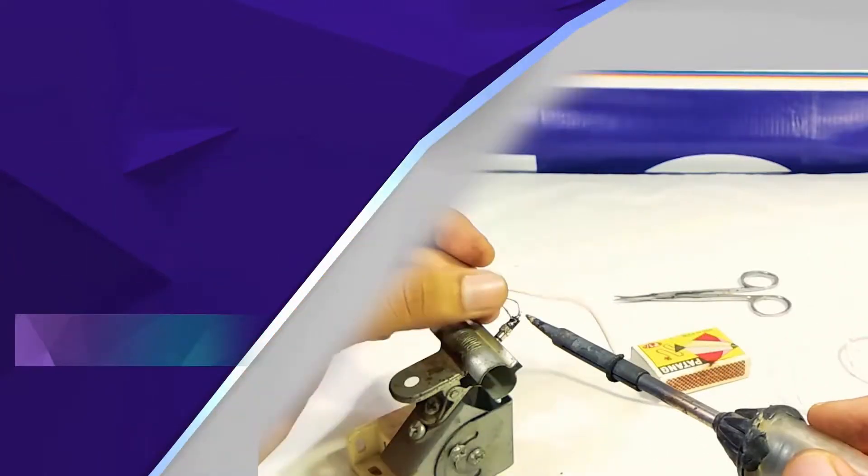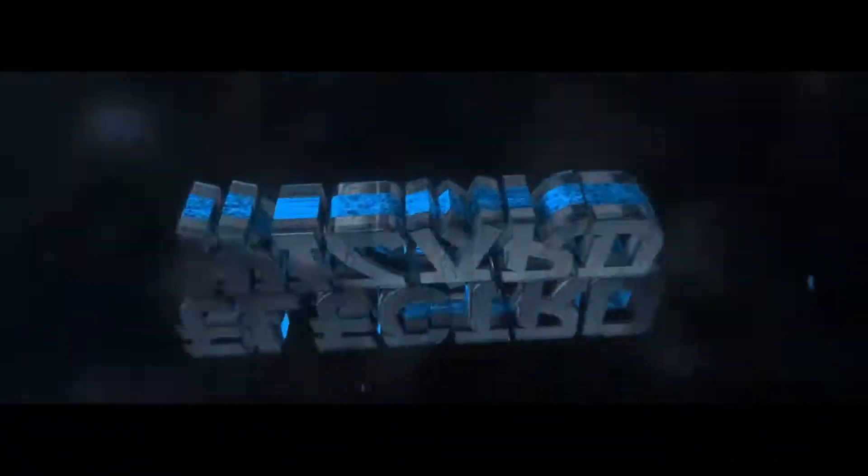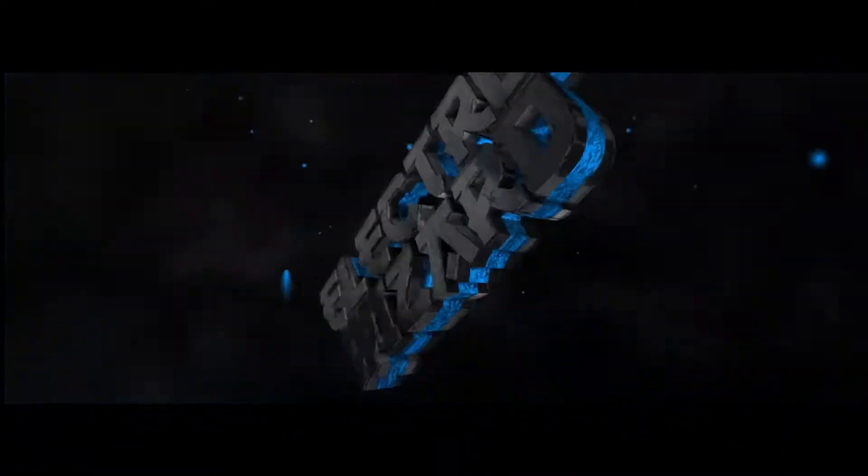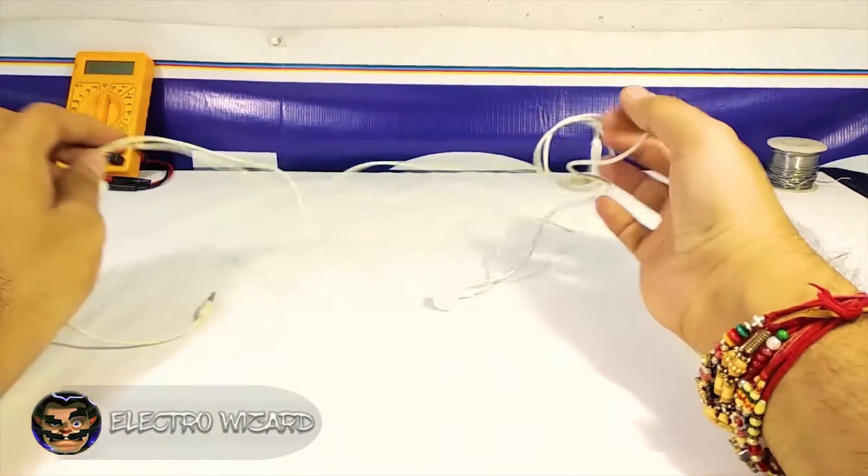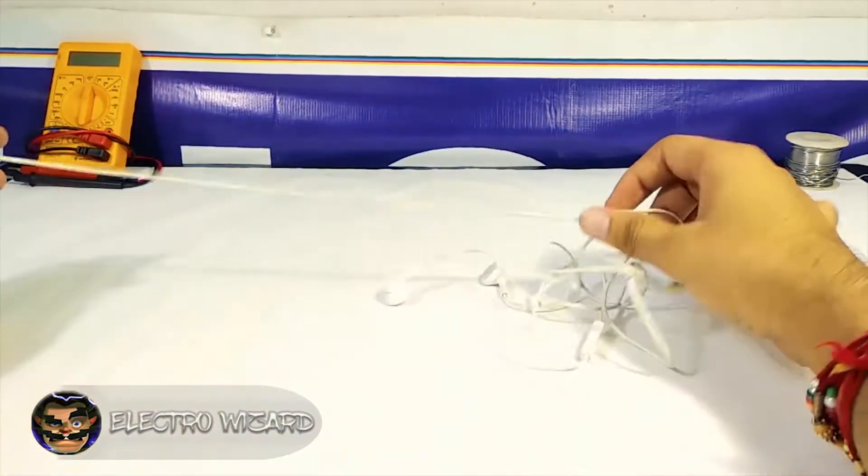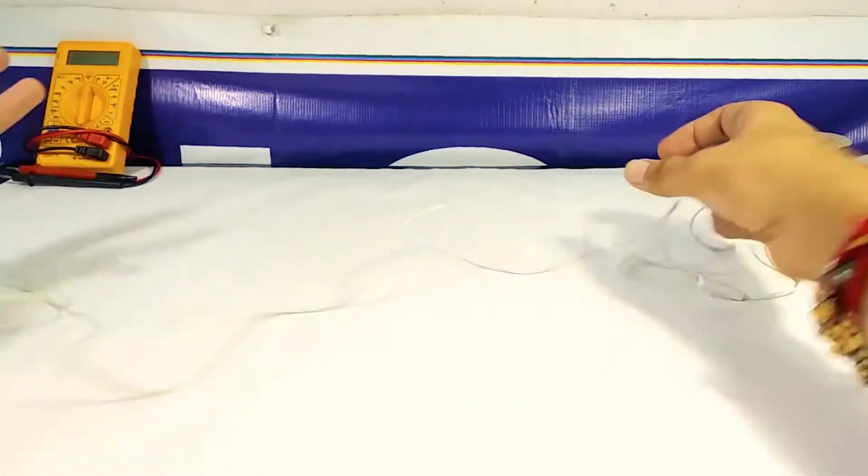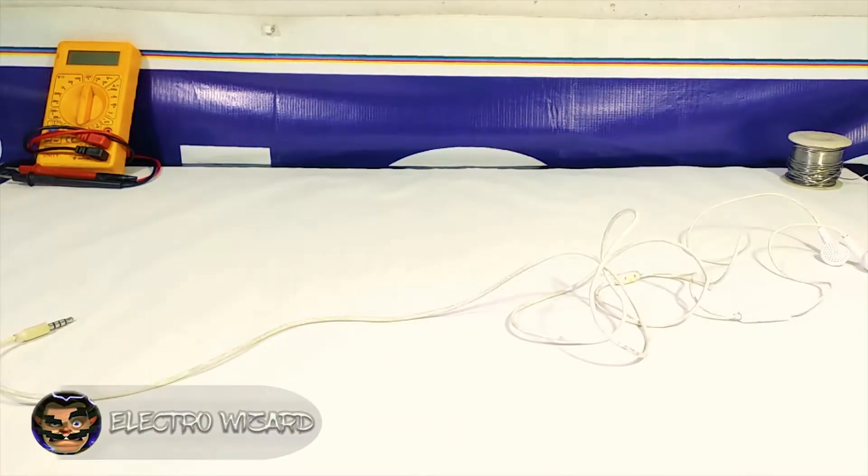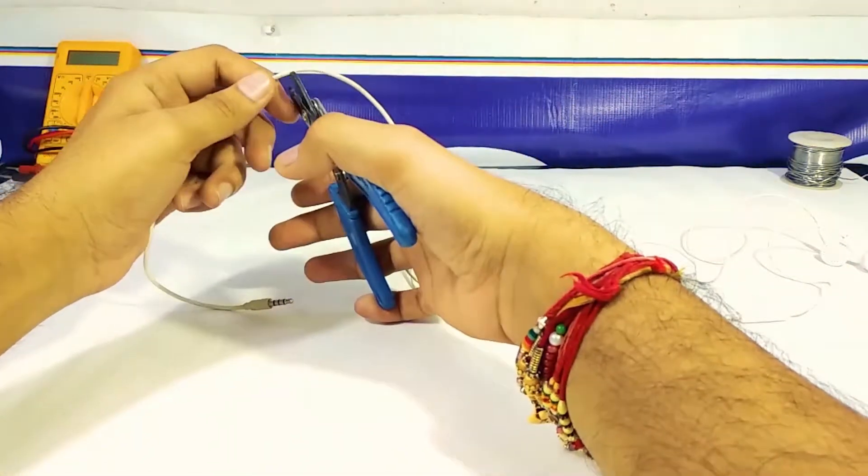Here I have an earphone whose both earpieces do not work, so I've decided to cut it near the 3.5 jack to check if the wires coming from the 3.5 jack are continuous or not. You can use a cutter or scissor, whichever you have.